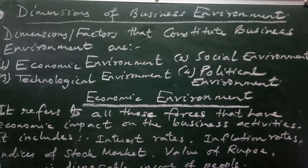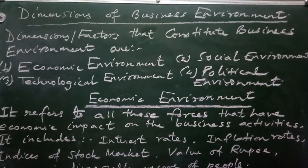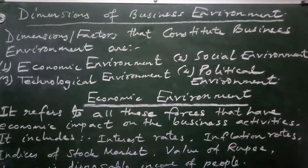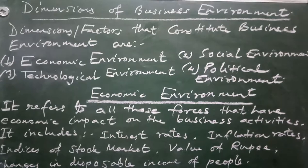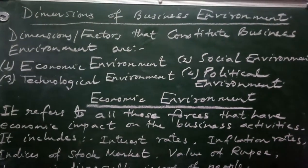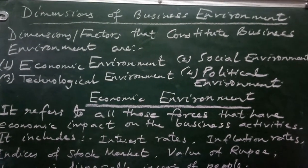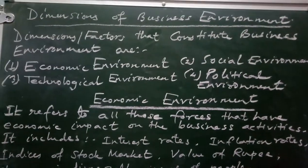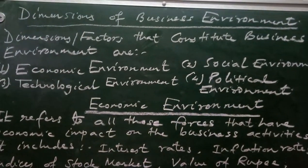In this video, we would be going through the dimensions of business environment. The dimensions of business environment can also be referred to as the elements or the factors of business environment. The dimensions or factors that constitute business environment are: number one, the economic environment; number two, the social environment; number three, the technological environment; and number four, the political environment.